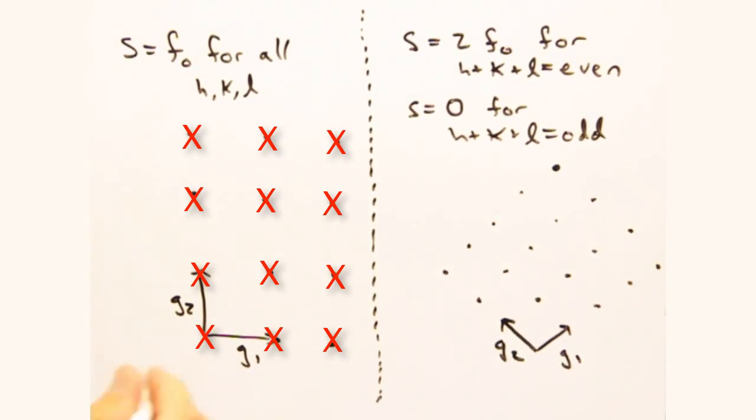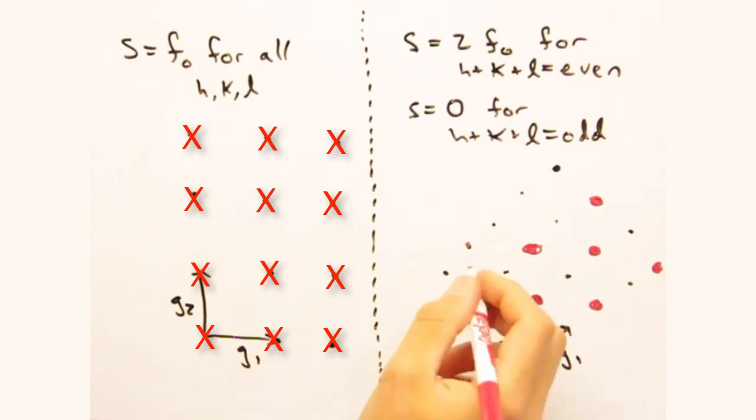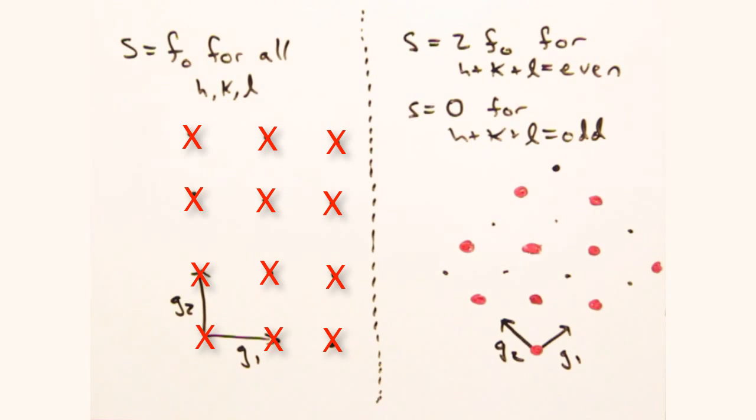But for the centered square cell, we now have a two atom basis. Assuming all the atoms are the same, the structure factor for this case is 2f0 for h plus k is an even integer, and 0 for h plus k being an odd integer.